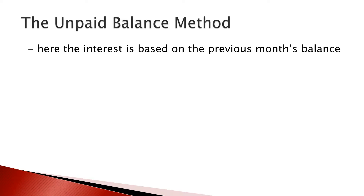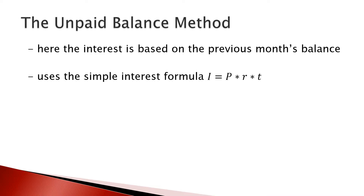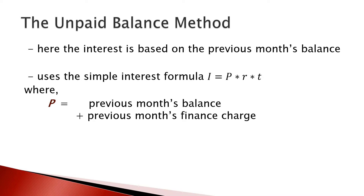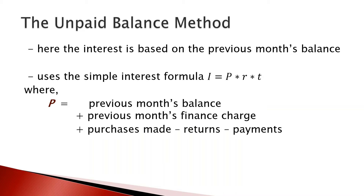In this section we learn how credit card companies charge for the amount you borrowed. The first method is the unpaid balance method, where interest is based on the previous month's balance using the simple interest formula I = PRT. The principal is the previous month's balance plus the previous month's finance charge, plus purchases (added), minus returns (subtracted), minus payments (subtracted). The rate R is the annual interest rate and T is 1/12 for one month.